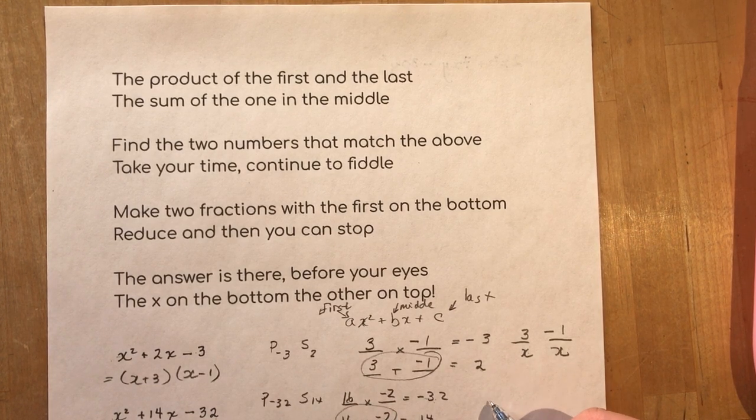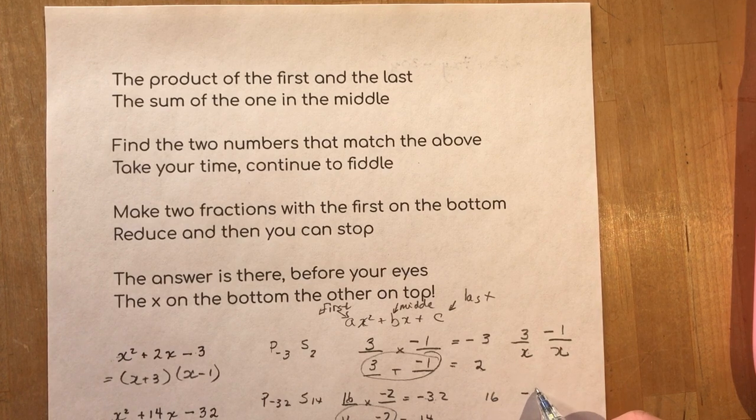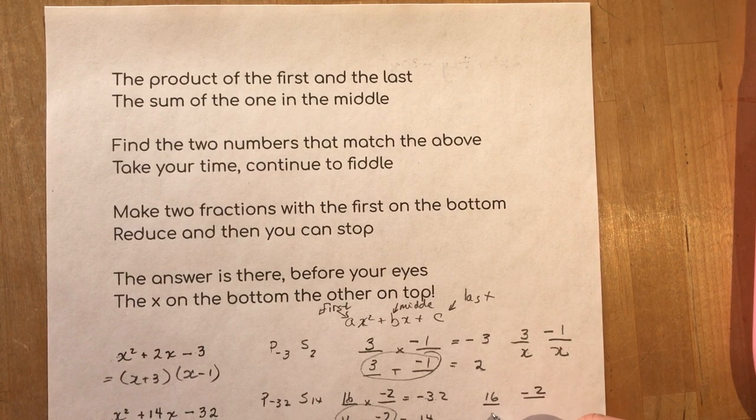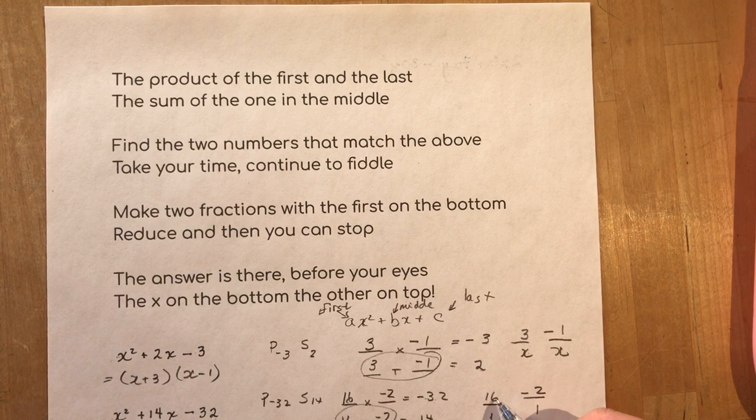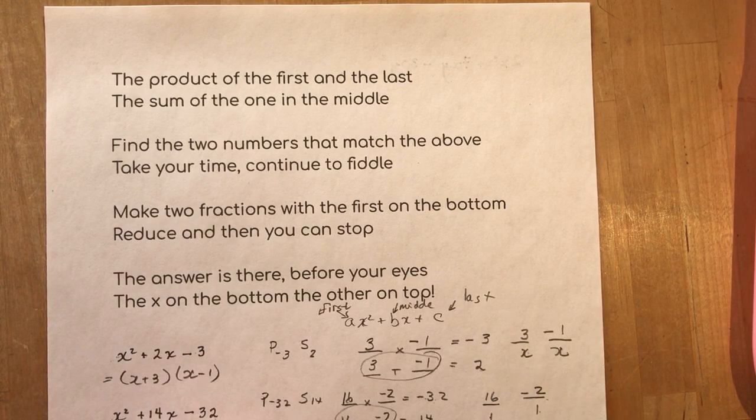Now you use these two numbers again. So I put 16 minus two. First on the bottom is a one. So I have x plus 16 x minus two. That is so easy.